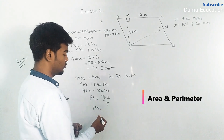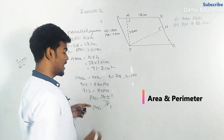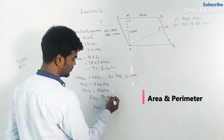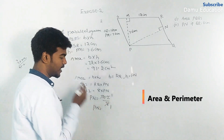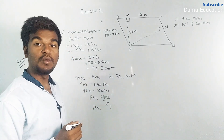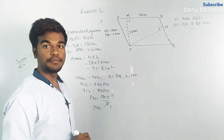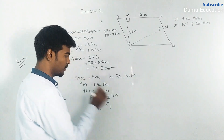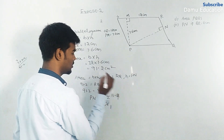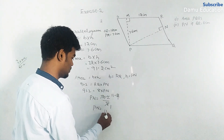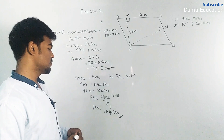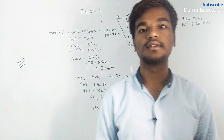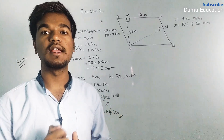Dividing 91.2 by 8 gives 11.4 centimeters. So PN equals 11.4 centimeters. This is how we solve these questions. Thanks for watching this video — if you want to see more videos, you can watch right here on YouTube. Please subscribe.